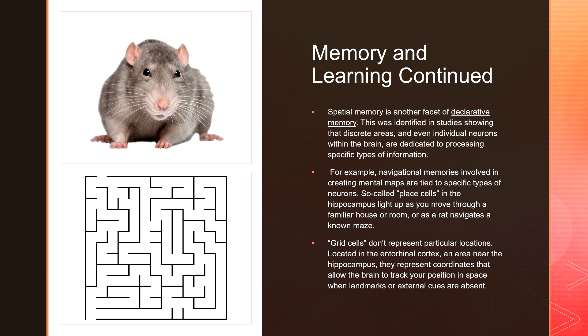Spatial memory was identified in studies showing that discrete areas, and even individual neurons within the brain, are dedicated solely to processing specific types of information — in this case, spatial awareness.